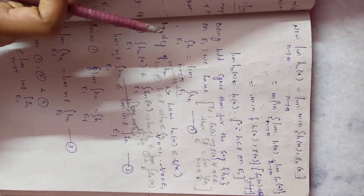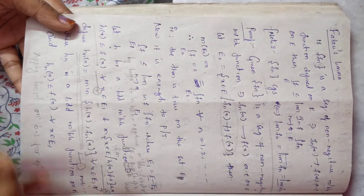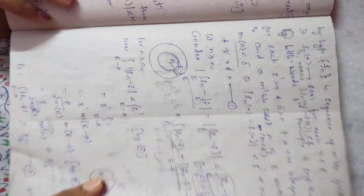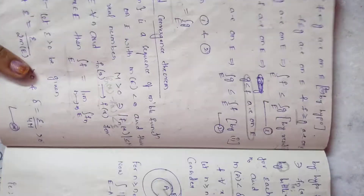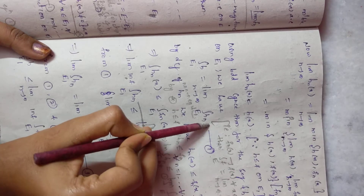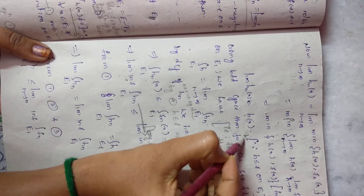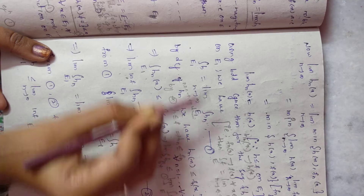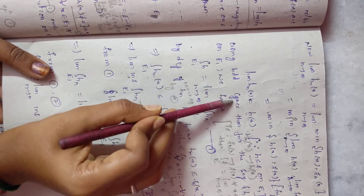Here Hₙ is a bounded measurable function with finite measure on E₁, and limit Hₙ = H(x), meaning Hₙ(x) converges to H(x). So the three conditions of the Bounded Convergence Theorem are satisfied. Therefore, by the Bounded Convergence Theorem: the integral of H over E₁ equals limit as n→∞ of the integral of Hₙ over E₁. Let this be equation 1.